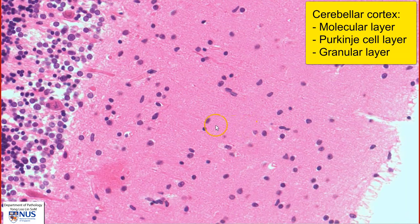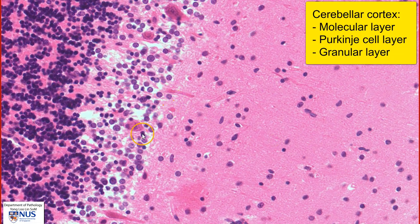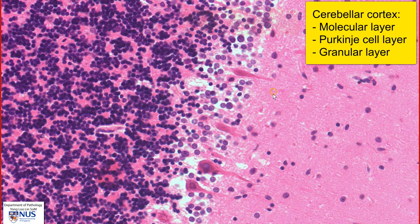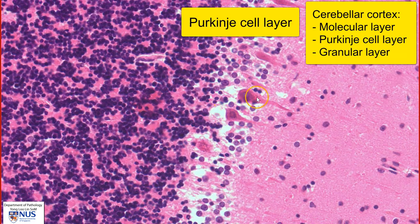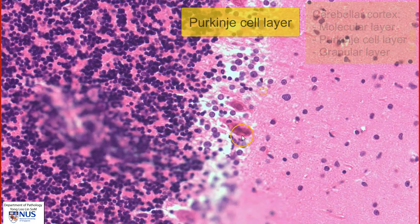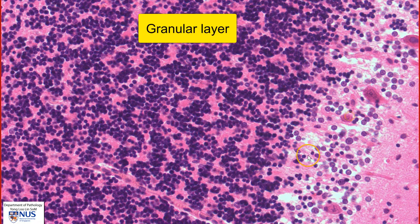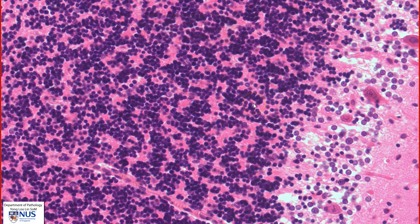In the molecular layer, we see mostly the dendritic processes of these Purkinje cells and some interneuronal cells. In the Purkinje area, we can see these large neurons with their dendritic processes joining up with the molecular layer. And finally, the granular layer, which is composed of these very uniform, round, blue-looking cells with minimal cytoplasm.